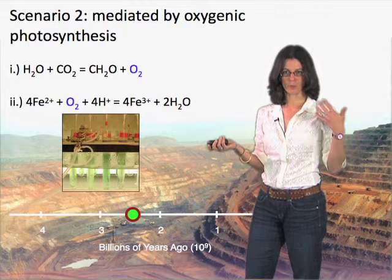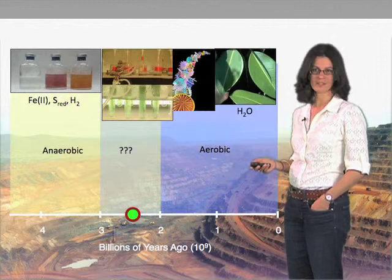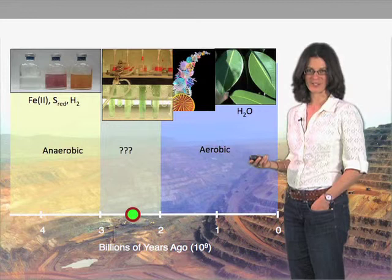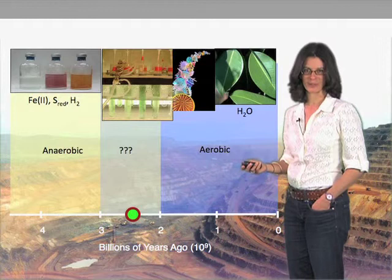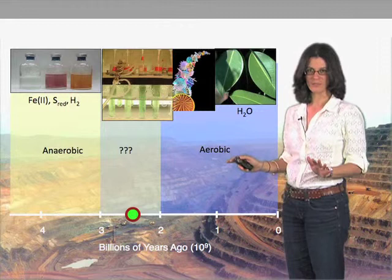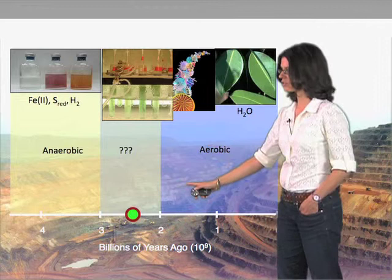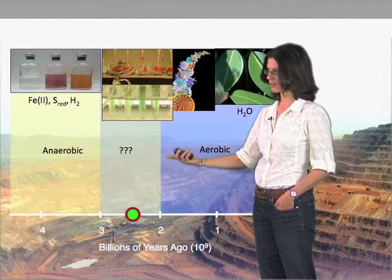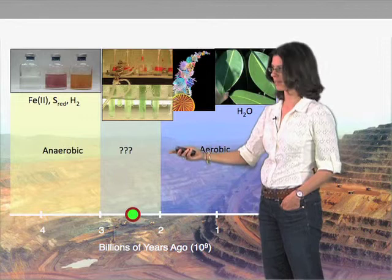How do we distinguish between them if we're interested in understanding the types of organisms present on Earth in the remote past? This is quite a challenge, and there will be many years of investigations needed to really pin this down. What I'll say for now is that we know from a variety of indicators that somewhere between 2 and 3 billion years ago, it is almost certain that the process of oxygenic photosynthesis arose.